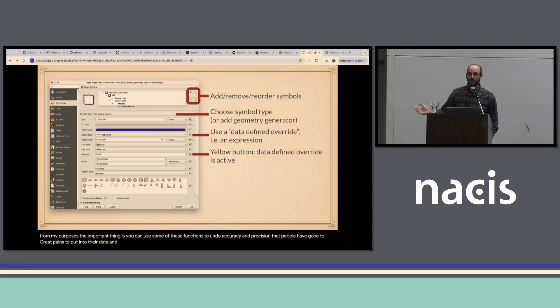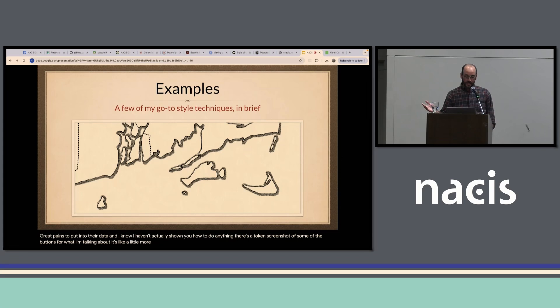I know I haven't actually shown you how to do anything. Here's a token screenshot of some of the buttons for what I'm talking about. So I'll get a little more specific and mention a few things that are the basis for most of the styles that I've come up with. These are not really styles themselves. They're kind of elements of styles, some ways of doing what I just quickly went through which you can then repeat and layer together into something more of a proper full map style.